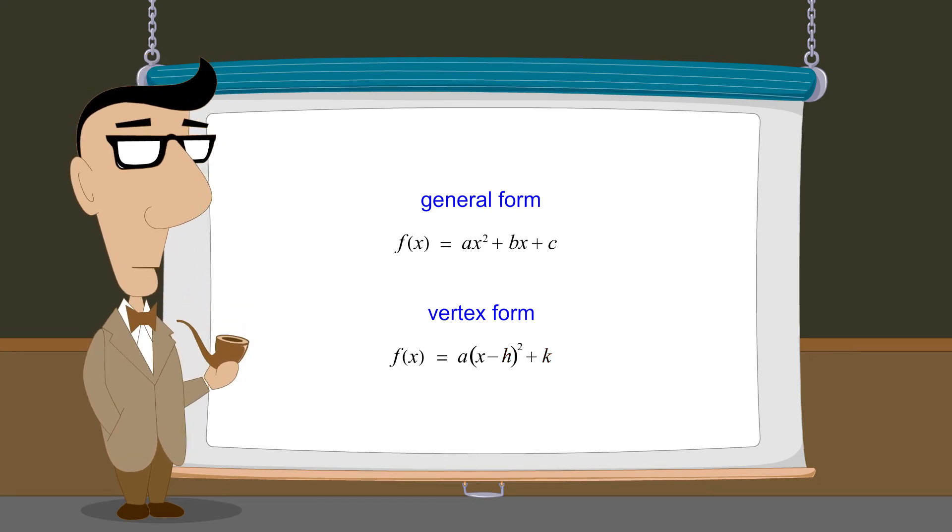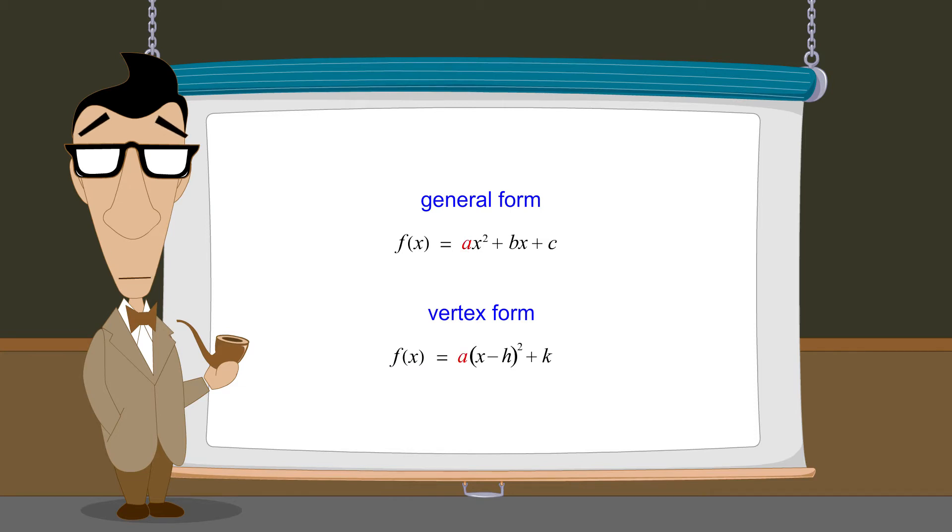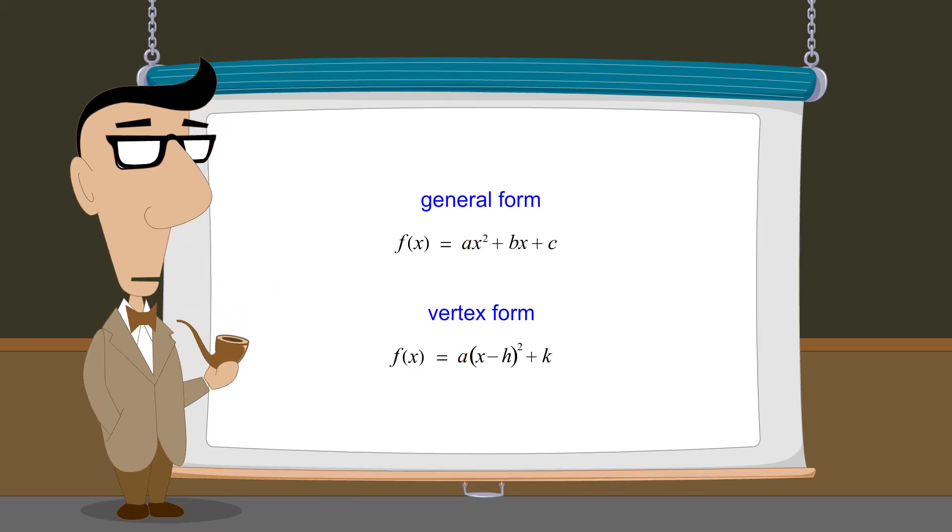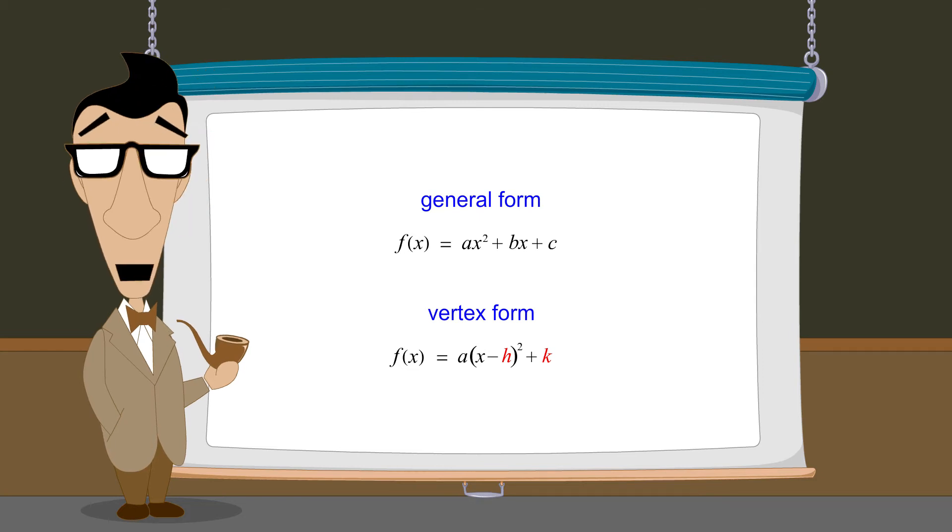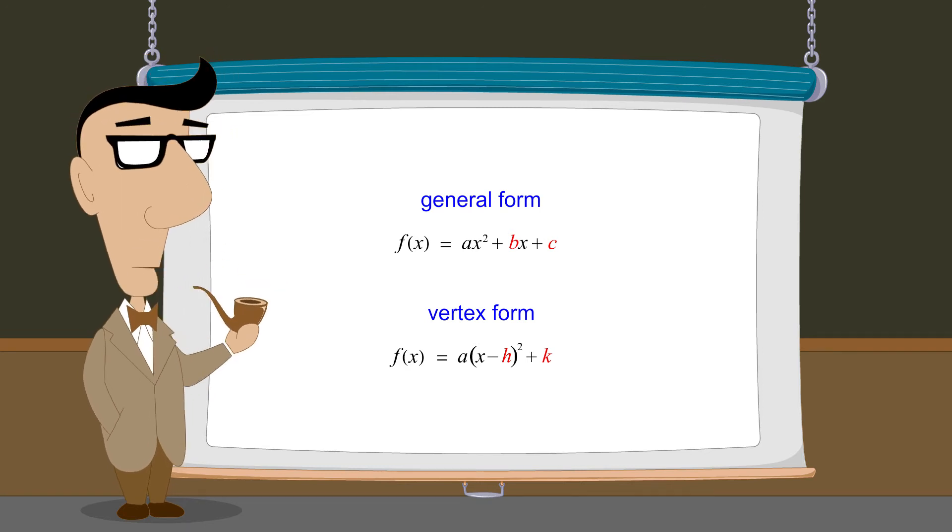Quadratic functions written in vertex form can be converted to general form and vice versa. The constant a is the same in both forms and doesn't change when converting from one form to the other. But we must calculate values for h and k when converting to vertex form, or b and c when converting to general form. So let's derive formulas to convert from either form to the other.